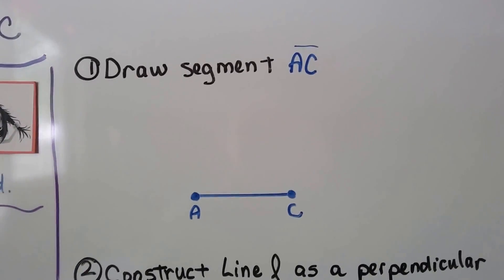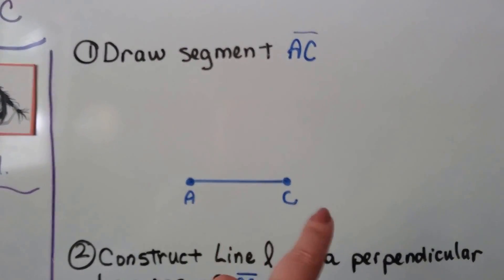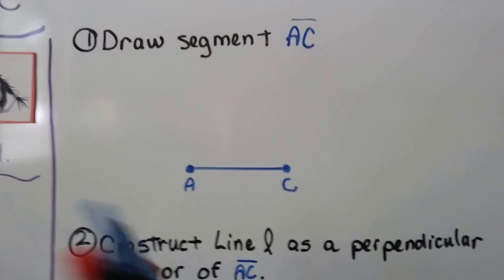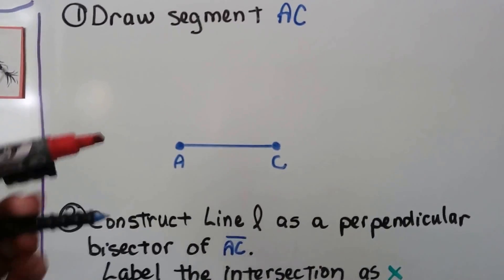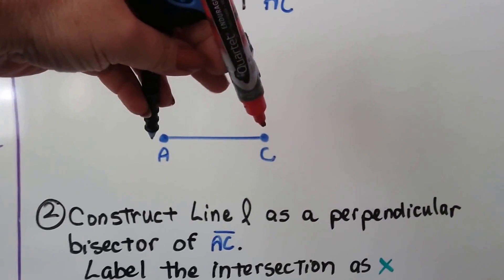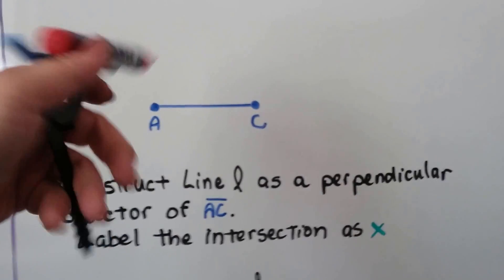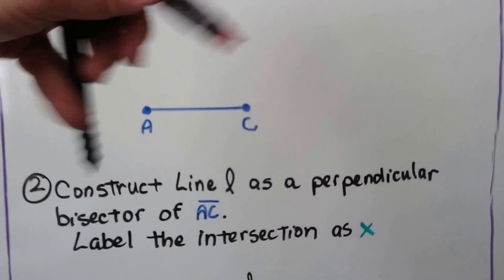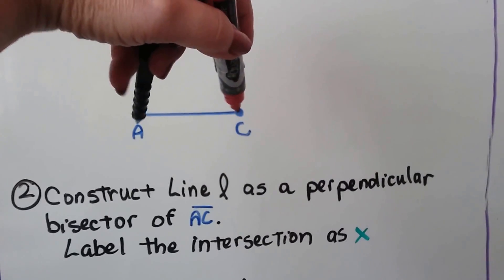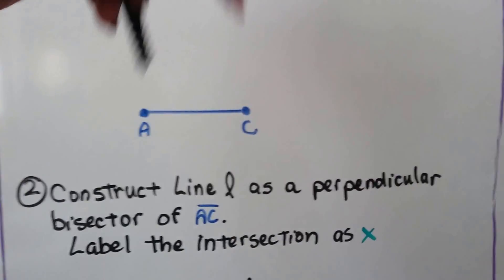The first thing we're going to do is draw segment AC like this. Mine's four inches. You don't want to make it too big because you want the compass to be able to reach. You don't want the compass to have to be so open that it's hard to deal with. So I made mine four inches which was very reasonable to do this. You could do three, five, whatever.